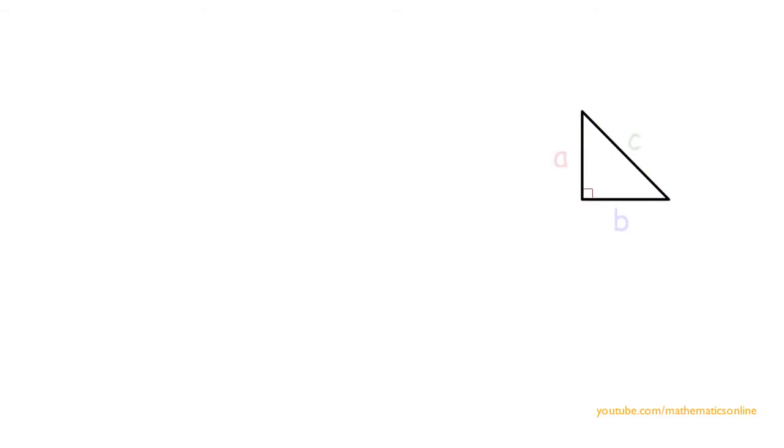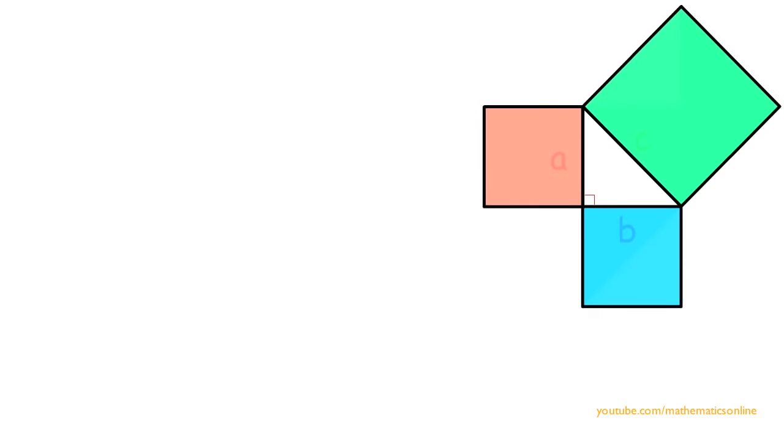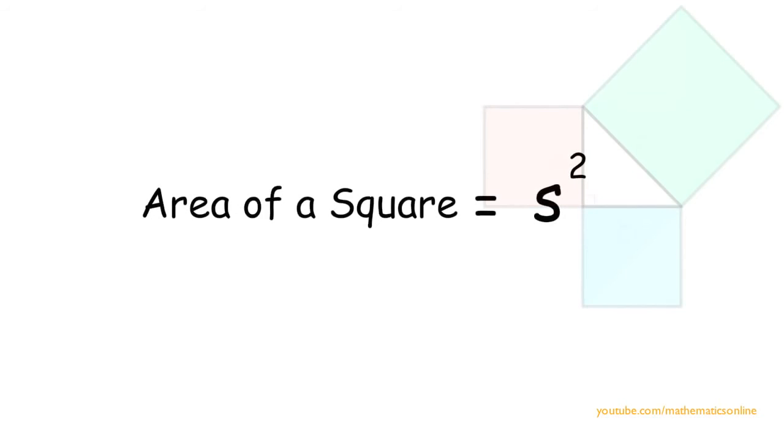So in order to show that the Pythagorean theorem works, we will demonstrate it with squares. Remember the area of a square is side squared.